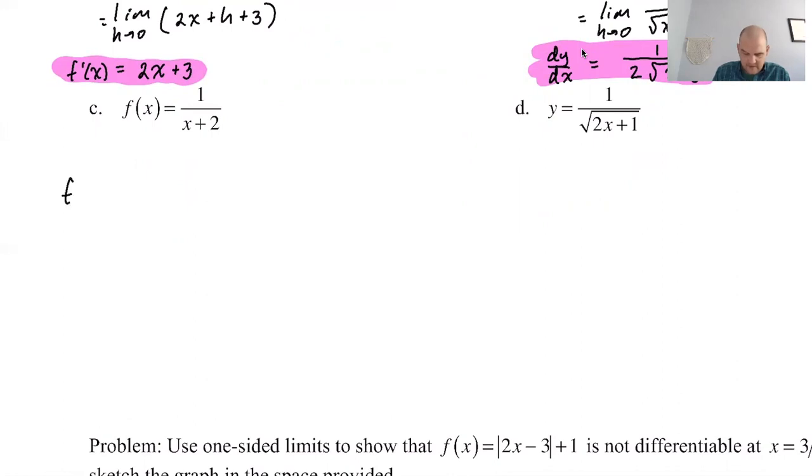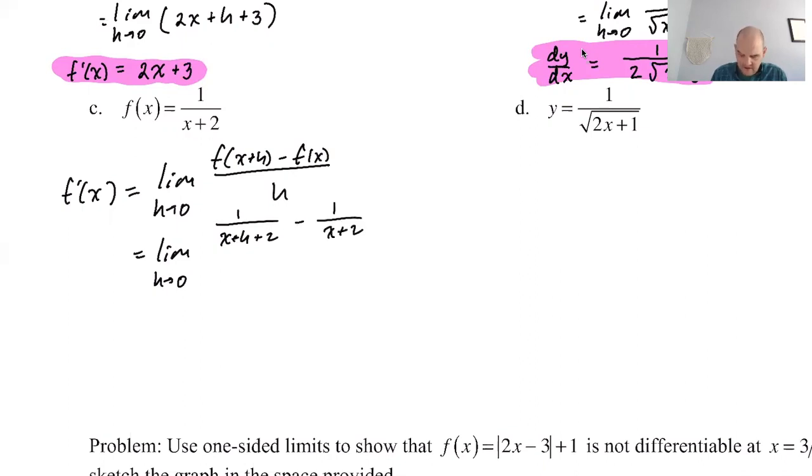All right. So f prime of x is going to be the limit as h approaches 0. So should I write it out this time? It's going to be f of x+h minus f of x all over h. And now we're going to actually do it. The limit as h approaches 0. f of x+h. So it's 1/(x+h+2) minus 1/(x+2) because that's f of x. And then all over h.